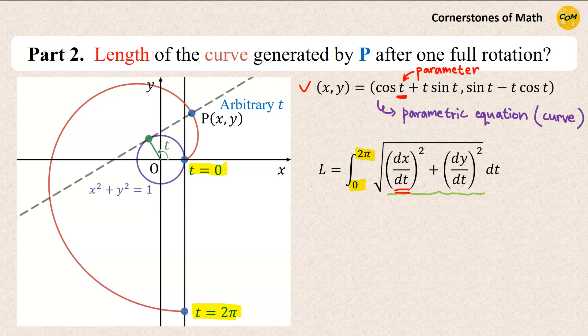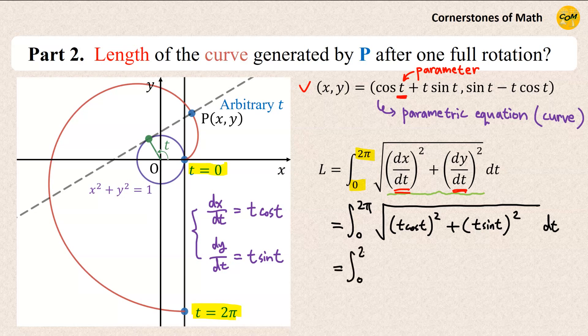So, first, we have to obtain dx over dt and dy over dt. These are simple derivatives, and if you calculate them, you will obtain dx over dt is T times cosine T, and dy over dt is T times sine T. Therefore, the length of the curve is integral from 0 to 2π square root of T cosine T squared plus T sine T squared dt, which gives integral square root of T squared times cosine T squared plus sine T squared dt. And since this is 1, we simply have square root of T squared, and since T is non-negative, we simply have integral T dt, which gives 2π squared.